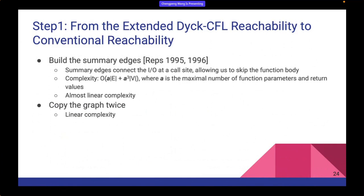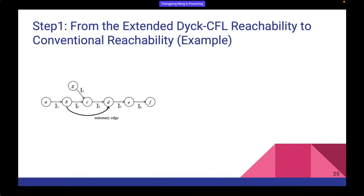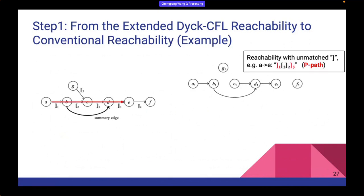After building summary edges, we copy the original graph twice to finish the transformation. For the first copy, we remove all edges labeled with left parentheses. This copy preserves all reachability relations with unmatched right parentheses — the P-paths. For example, there is a valid path from vertex A to vertex E in the original graph representing an extended Dyck-CFL reachable path, and there is a corresponding path from A1 to E1 in the first copy.